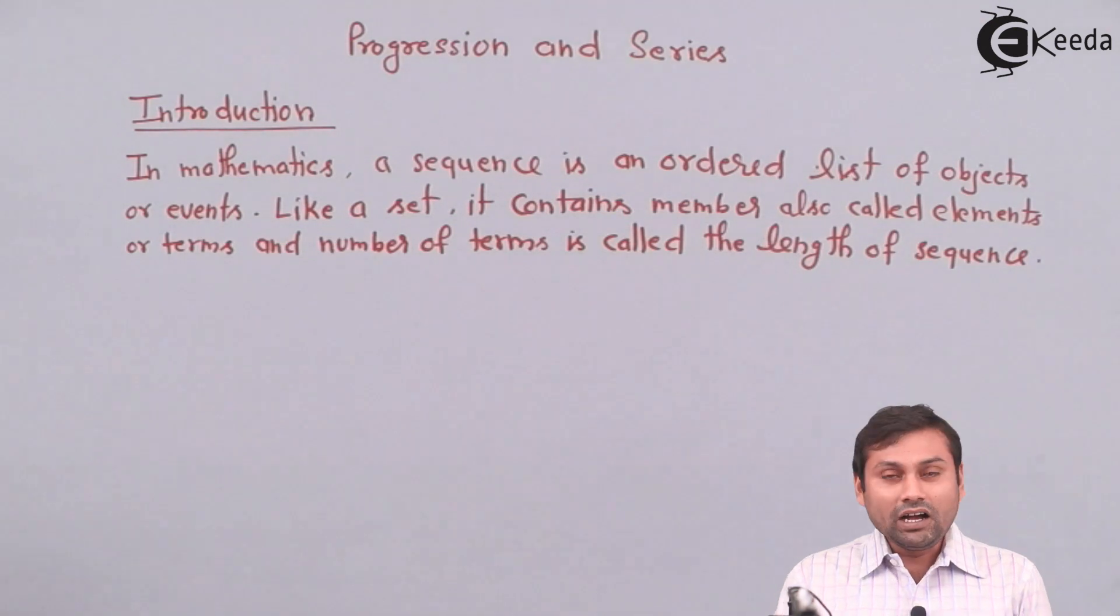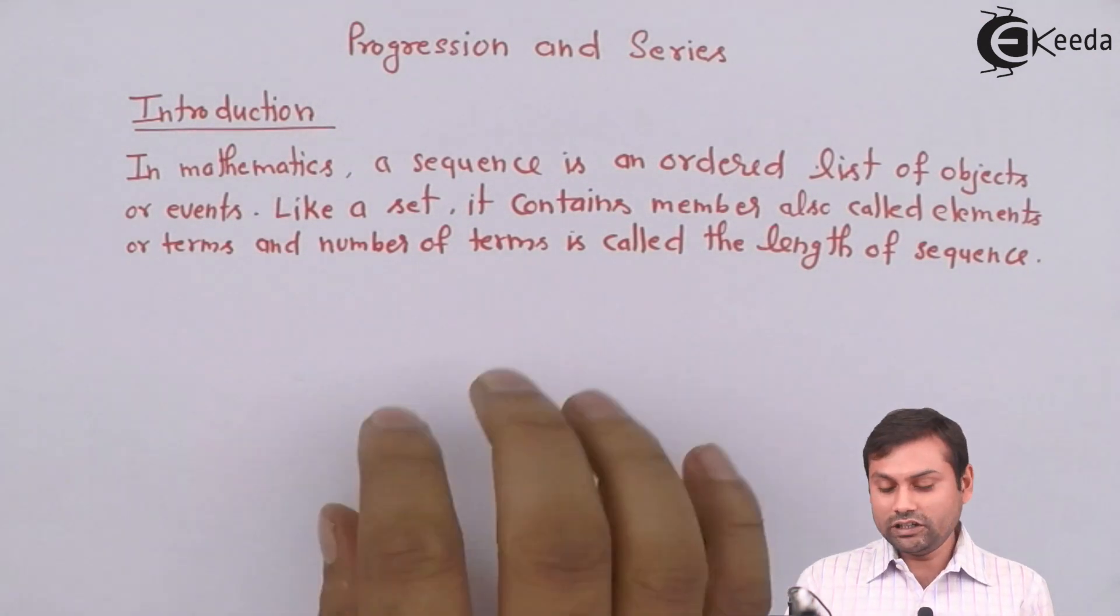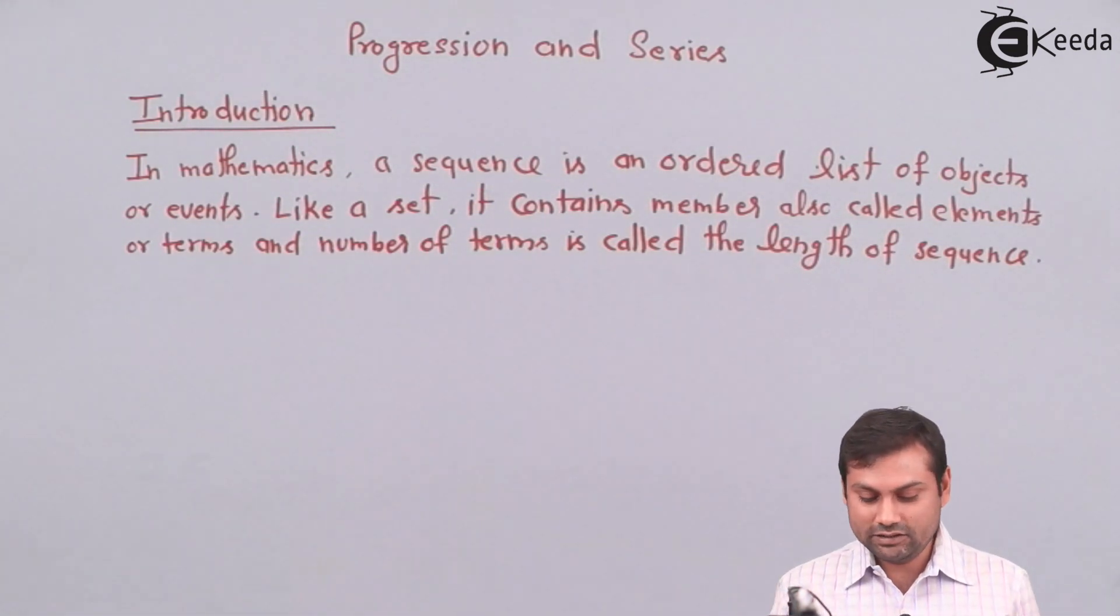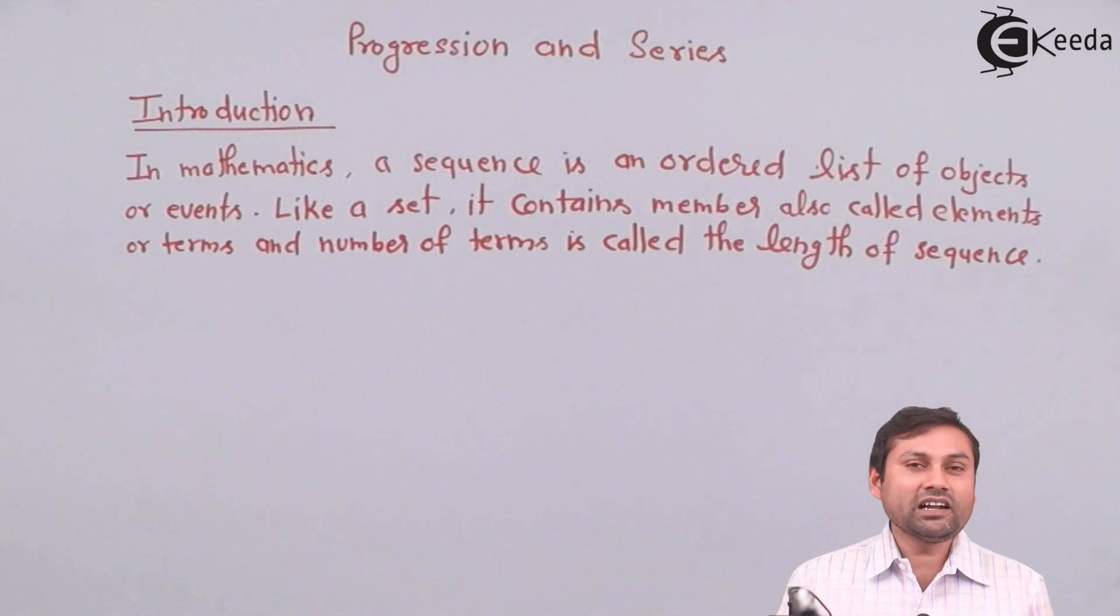An ordered list is called sequence. A sequence is an ordered list of objects or events. It contains members also called elements of a sequence or terms of the sequence, and number of terms is called the length of the sequence. For example, natural numbers 1, 2, 3, 4, 5, 6, 7, 8.